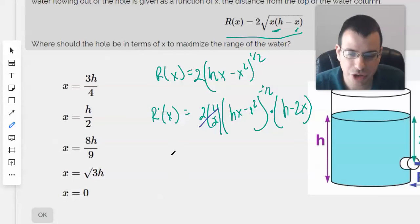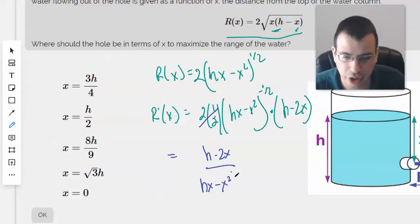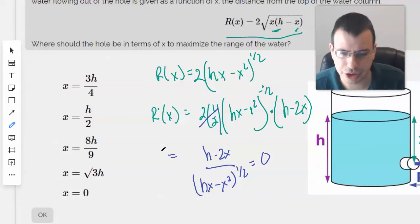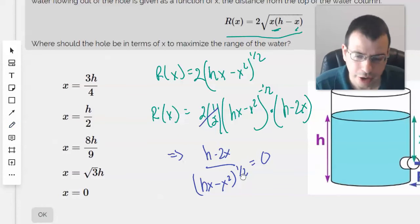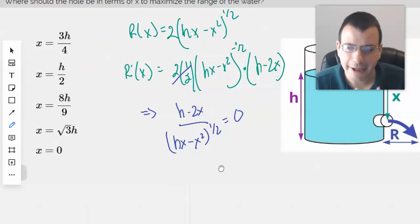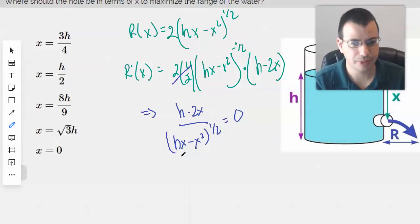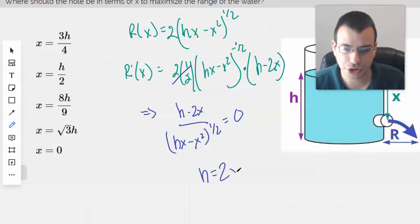So then, the 1 half and the 2 will cancel out. And we're left with h minus 2x over h x minus x squared to the 1 half. We'll set that equal to 0. So we have, multiplying both sides by the bottom, this will just disappear. And so we'll be left with h equals 2x, therefore x will equal h over 2.